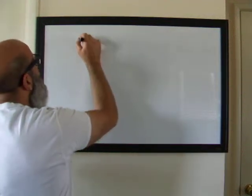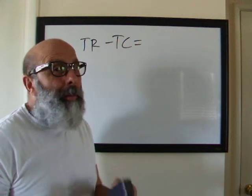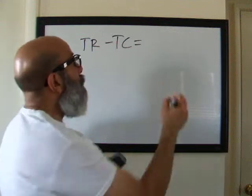In your book, there are two equations for profit. TR minus TC equals profit. In economics, we use the pi sign to represent profit.